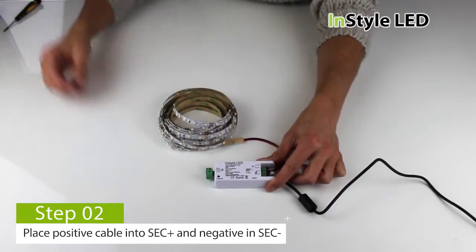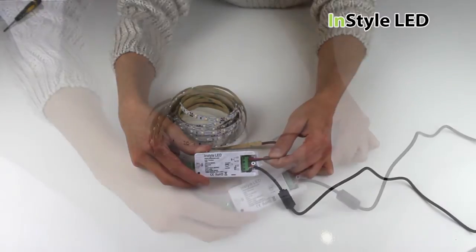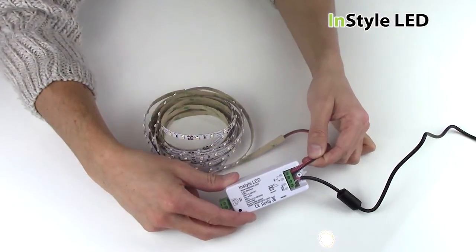Next, wire the positive cable from the LED tape to the SEC plus and the negative cable to the SEC minus on the dimming receiver.